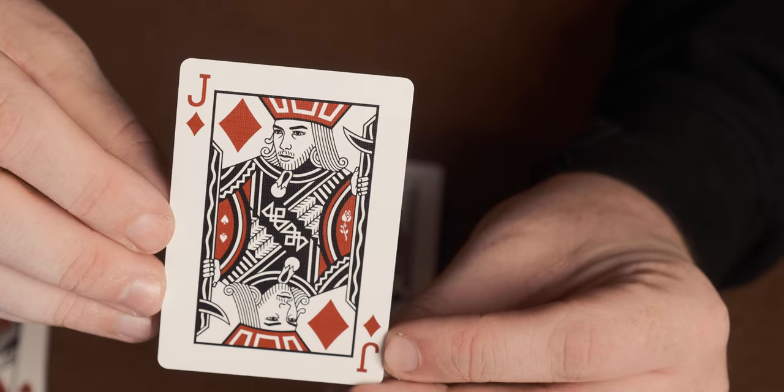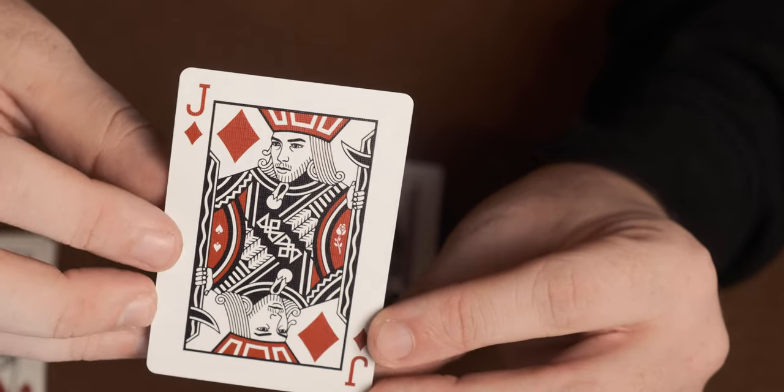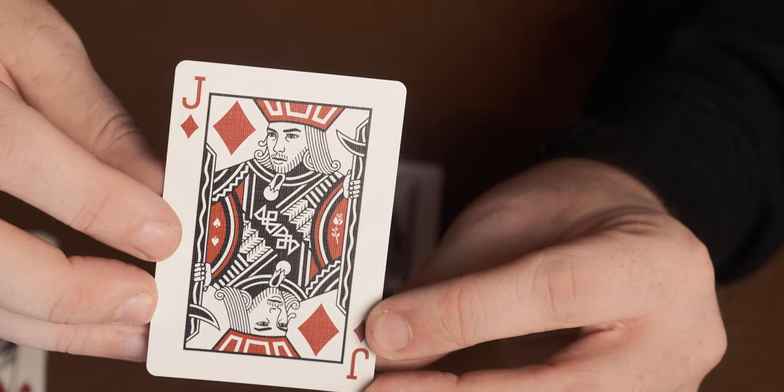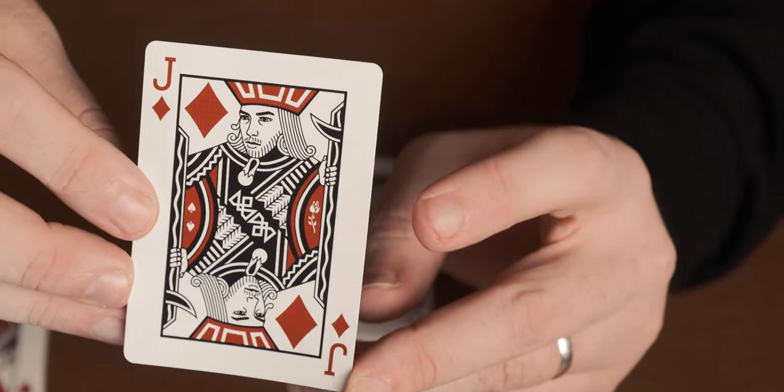Next up is the Jack of Diamonds and this is Daniel Schneider. As you can see here there's another little reveal for the two of spades on the jacket there and there's also Daniel Schneider's rose there on the other side.